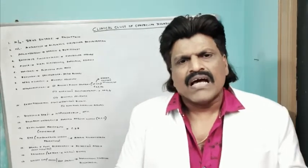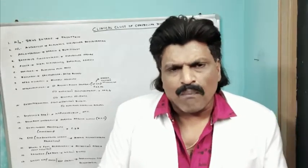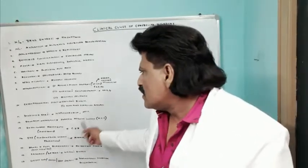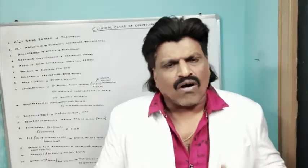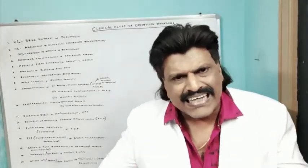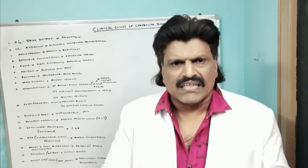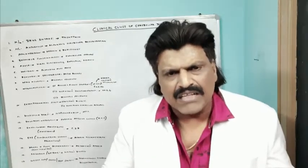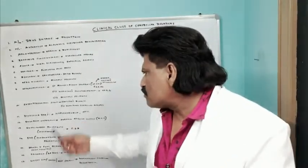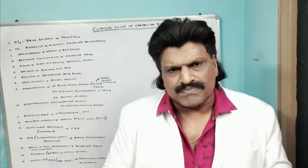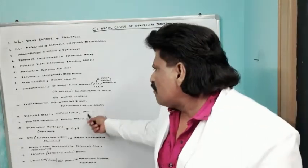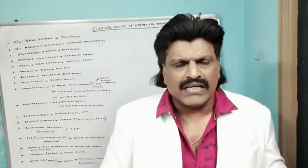If a person has extrapyramidal signs along with cerebellar involvement, we should suspect Wilson's disease — a disorder of copper metabolism — and olivopontocerebellar atrophy. If on examination a person has decreased deep tendon reflexes along with cerebellar signs, we should suspect hypothyroidism.